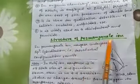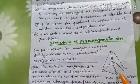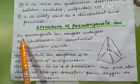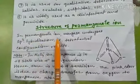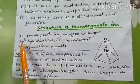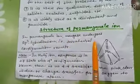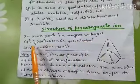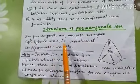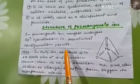The structure of the permanganate ion: In the permanganate ion, manganese undergoes sp³ hybridization, resulting in a tetrahedral configuration.